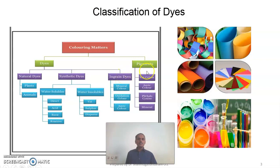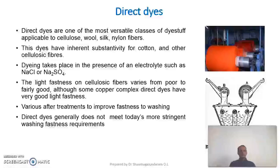Under pigments, there are four types available: vat pigment, azoic pigment, phthalocyanine pigment, and mineral colours. Now we will discuss about direct dyes.